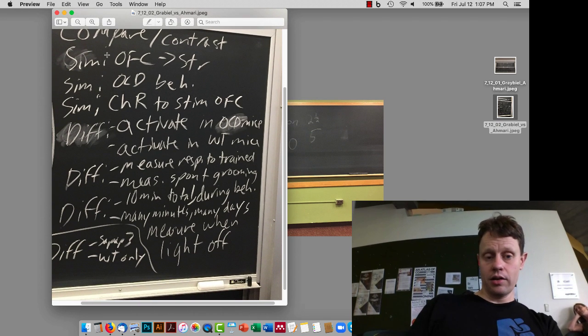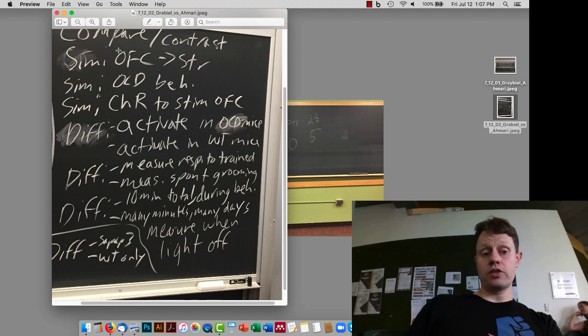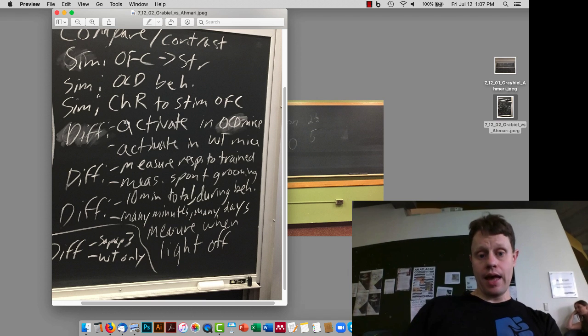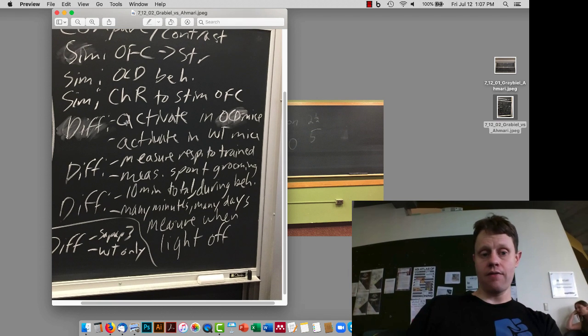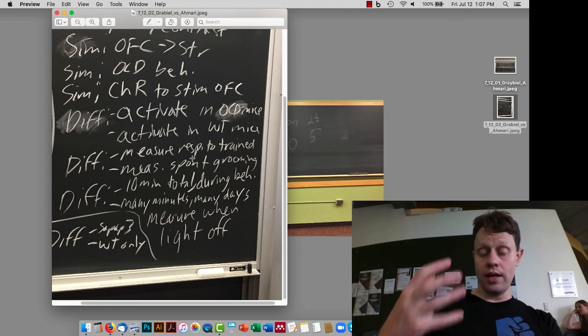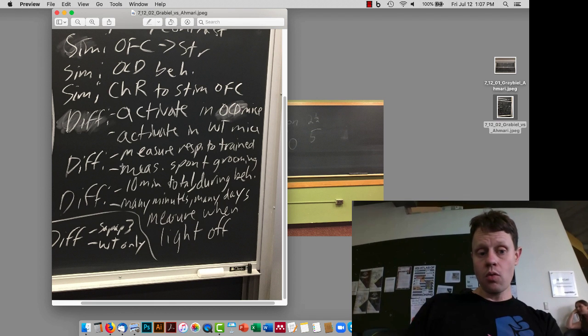So first of all, there are some similarities. We're looking at OCD behavior. We're stimulating the orbital frontal cortex to striatum synapse with channelrhodopsin. But there are also a number of differences. So in the Ann Gravy study, they activated this in mice that already had obsessive-compulsive disorder or were already mutated to have obsessive-compulsive-like behaviors. In the Suzanne Amari case, they were looking at wild-type mice. In terms of the measurements, in the Ann Gravy study, they measured response to trained behavior, this trained-learned association. Whereas in the Suzanne Amari paper, they were measuring spontaneous grooming, just letting the mice alone and seeing how much they groom themselves.